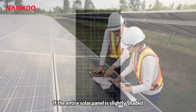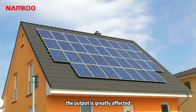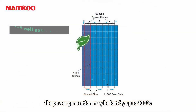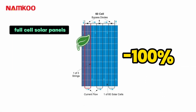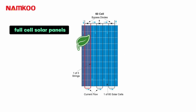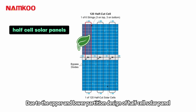If the entire solar panel is slightly shaded, the output is greatly affected. The power generation may be lost by up to 100%, resulting in a power output of zero — like an old-fashioned Christmas tree. If one bulb goes out, the others will also fail.